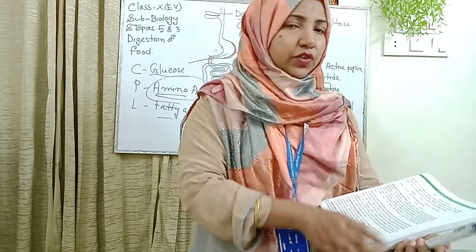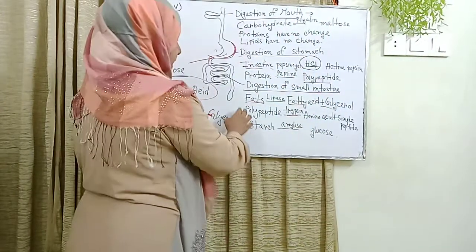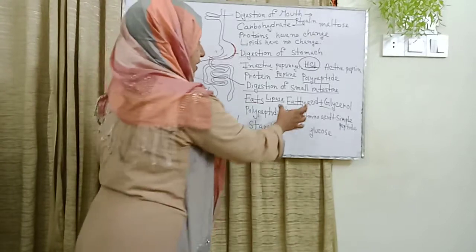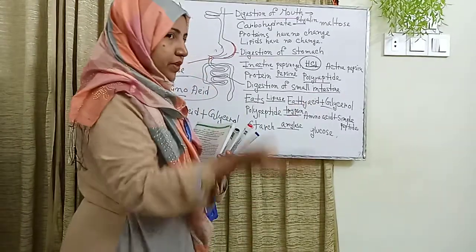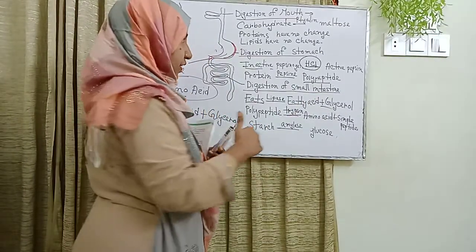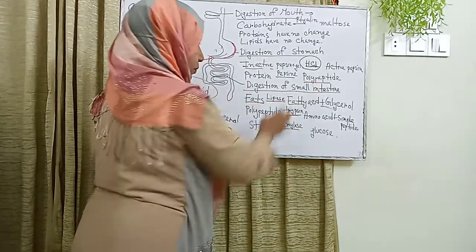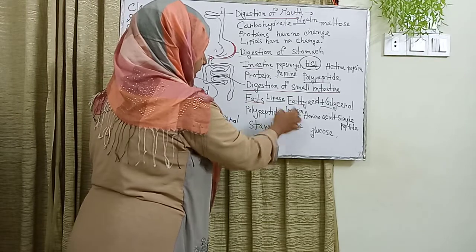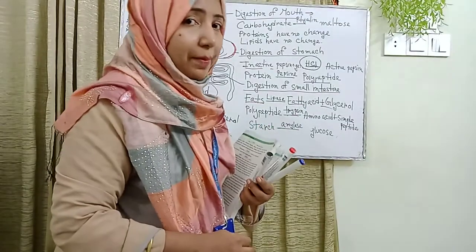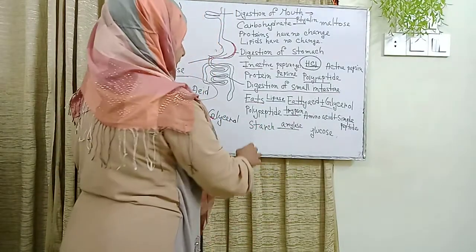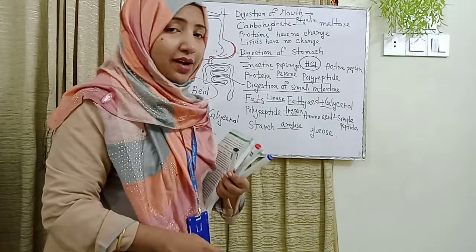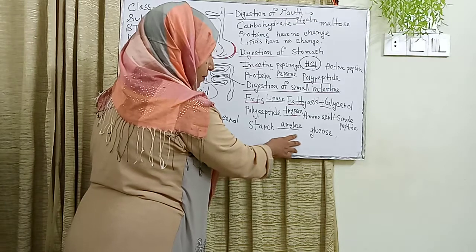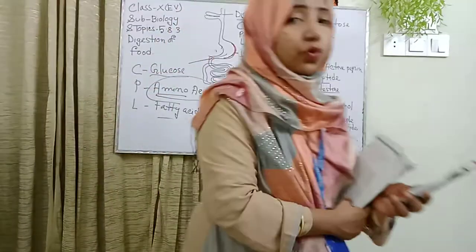For fats, the enzyme lipase converts them into fatty acid and glycerol. For proteins, the enzyme trypsin converts polypeptide into amino acids and simple peptides. For carbohydrates, the enzyme amylase converts starch into glucose.